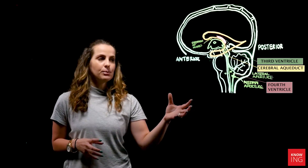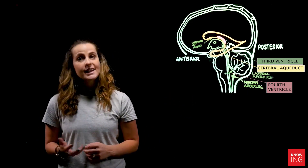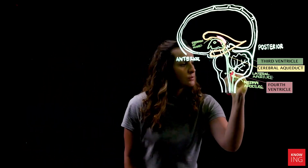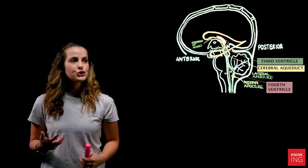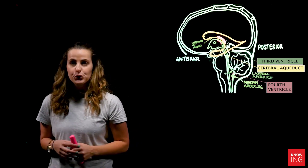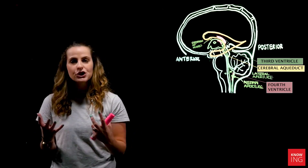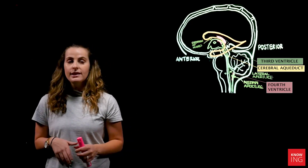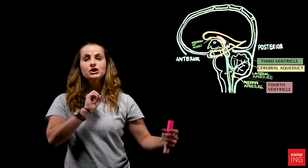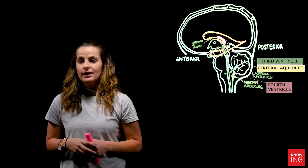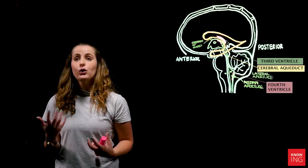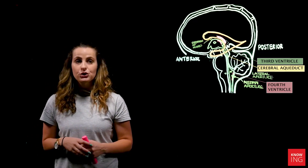To complete the picture, the choroid plexus corresponding to both the third and fourth ventricles will be added. The lateral ventricles are a large structure, so it's important to be familiar with the major terminology for the horns — the projections anteriorly, posteriorly, and inferiorly — before looking at cross-sectional two-dimensional scans.